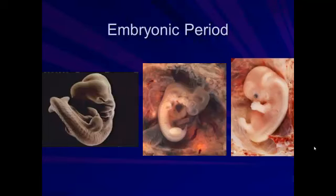We move now into the embryonic period once this differentiation has happened and systems start to form. On the left, we see an embryo very early in this period, and on the right, we see an embryo that's a lot later towards the end of this period. In the beginning, we don't really look very human — we look a little bit alien and have some characteristics, like a tail, that seem strange to us. If you were to look on the internet for images of the embryos of other species, you would find that those embryos look a lot like our own human embryos.